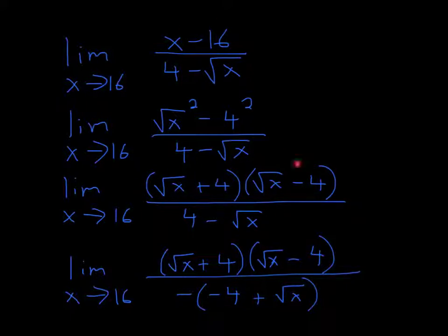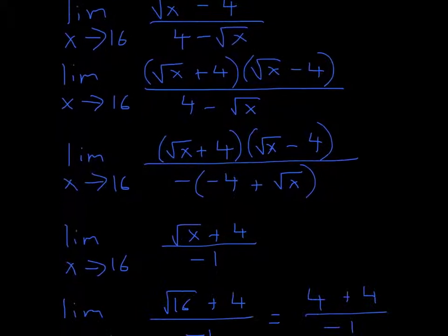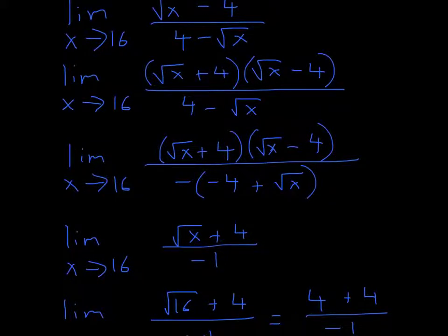But this is helpful because this top is starting to look like the bottom. So we can cancel something out. But it doesn't look like that yet, because we don't have a negative square root of x. So we take out this negative sign.